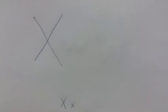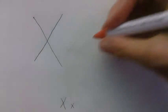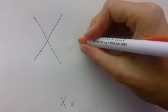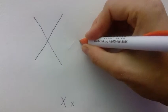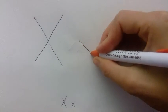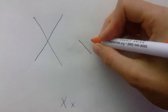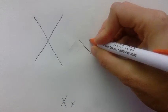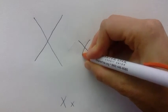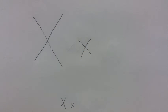The lowercase letter X is the same, but you start in the middle of the page and draw a short diagonal line one way, come back to the top, and draw a short diagonal line the other way. And you made your lowercase X.